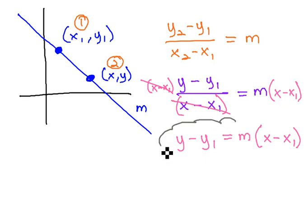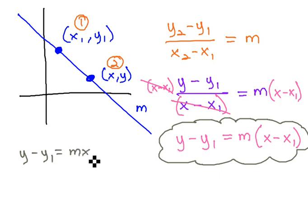We're going to call this our second formula for the equation of a line. This formula, y minus y1 equals m times x, parenthesis, x minus x1 is called the point slope formula.